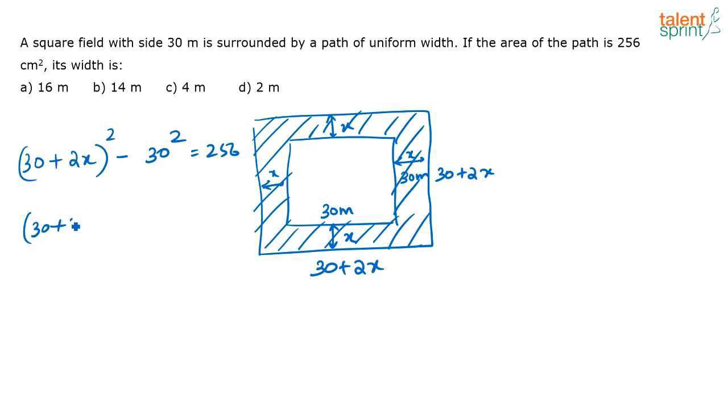That is (30 plus 2x minus 30) into (30 plus 2x plus 30), correct? Or this is equal to, you have 2x into (60 plus 2x), that is equal to 256.